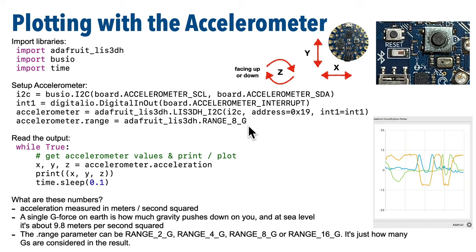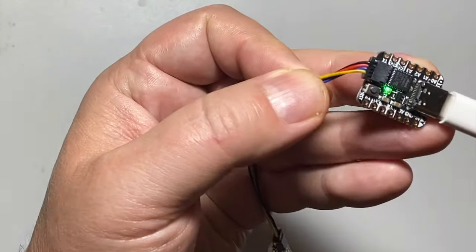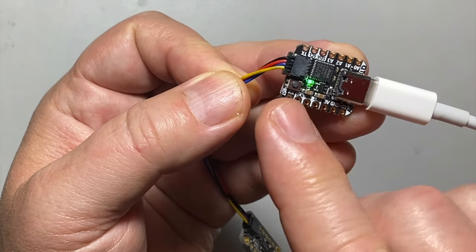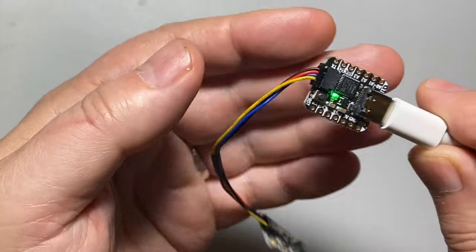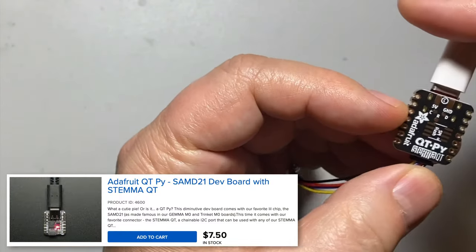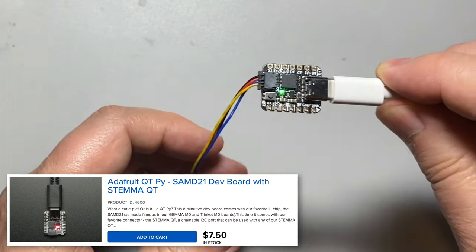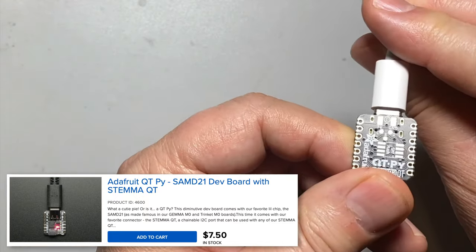Just a quick aside for a time when you might use a different board without a built-in accelerometer and want to hook one up externally. The CircuitPython code for the internal accelerometer on the Circuit Playground is a bit different than for an external one. Here's an Adafruit QT Py — QT because it has a StemmaQT I2C port and Py because it runs Python. It's super tiny, and at the time of recording it was about $7.50, but it lacks the built-in sensors of the CPB.